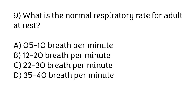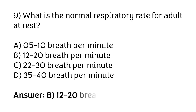What is the normal respiratory rate for an adult at rest? Options: 5 to 10 breaths per minute, 12 to 20 breaths per minute, 22 to 30 breaths per minute, 35 to 40 breaths per minute. The correct answer is option B — 12 to 20 breaths per minute.